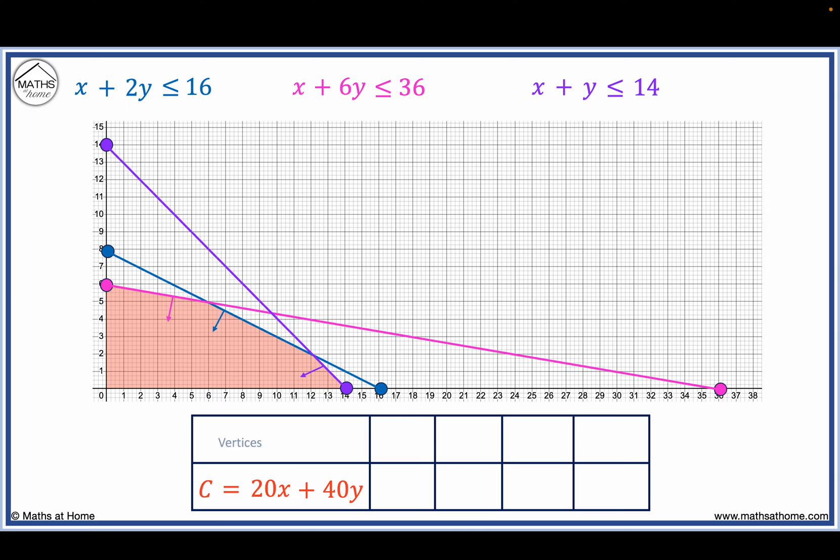The vertices of the feasible region are (0, 6), (6, 5), (12, 2) and (14, 0).